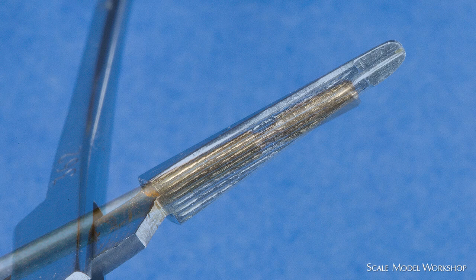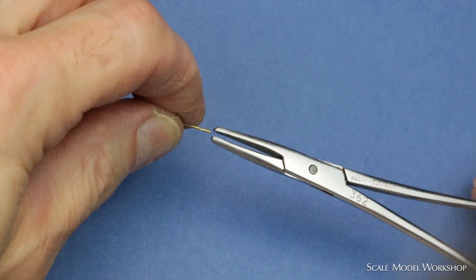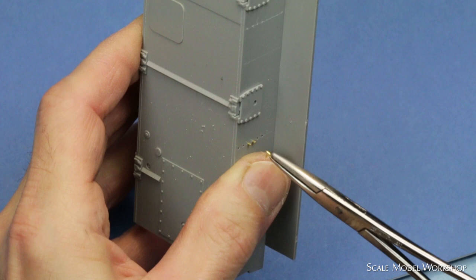I use a modified hemostat to hold the finished rivet and snap it off the end of the wire. The wire rivet's then placed into the hole.